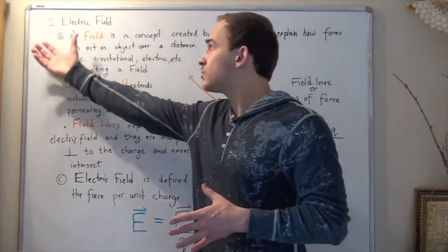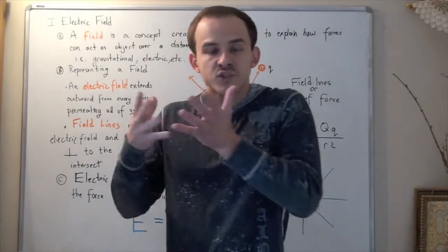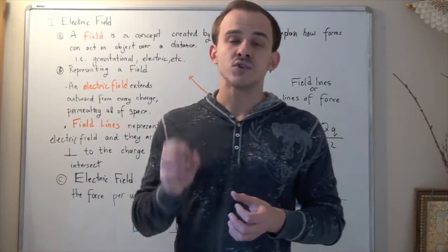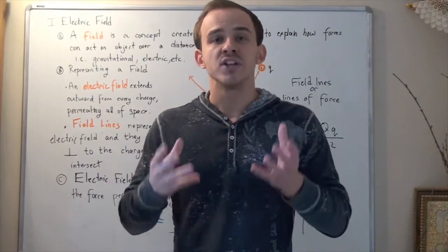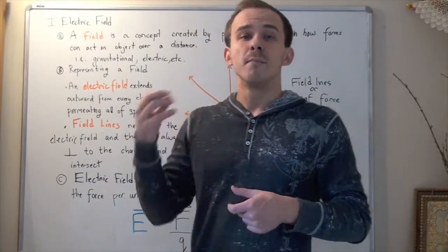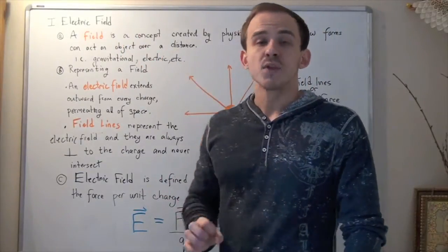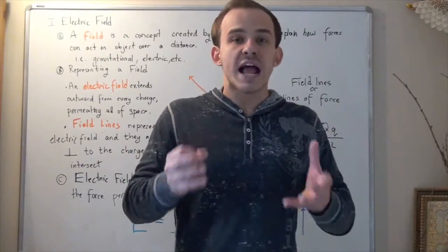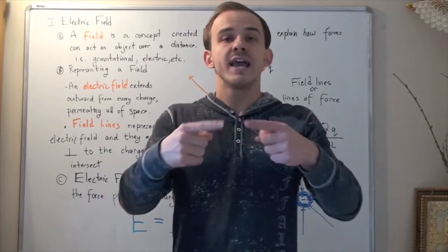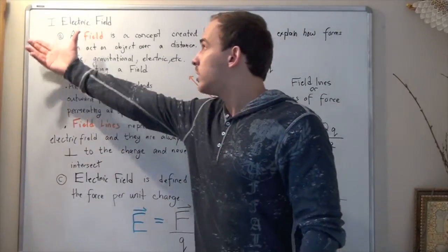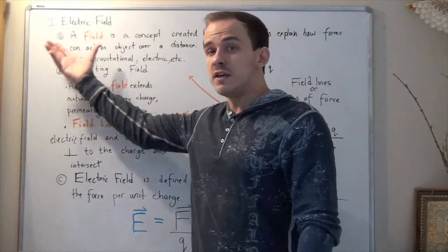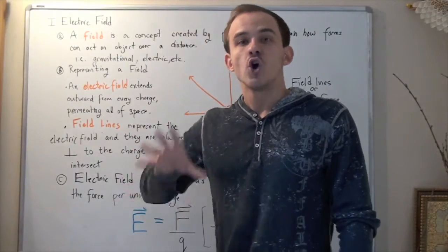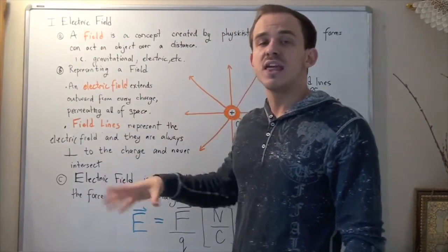So what do the two words 'electric' and 'field' mean? Well, 'electric' comes from electricity, which simply means moving electrons. Electrons have an innate property known as charge, so 'electric' must mean charge. And 'field' is simply an area — a farmer is plowing his or her field, meaning some piece of land, some area. So 'electric field' in everyday language should mean something like a charge that creates a field, and that's exactly what is meant by an electric field.